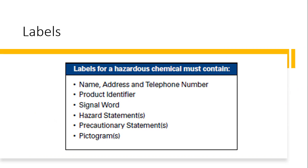There are a few different versions of labels, but they are very standard and must contain specific information: the name, address, and telephone number of the manufacturer; the product identifier; the signal word; hazard statements; precautionary statements; and the pictogram. The label provides information to workers on specific hazardous chemicals. While labels provide important information for anyone who handles, uses, stores, or transports hazardous chemicals, labels are limited in the information they provide. This is the first line of information, and the SDSs are the second, where workers can receive more complete information.